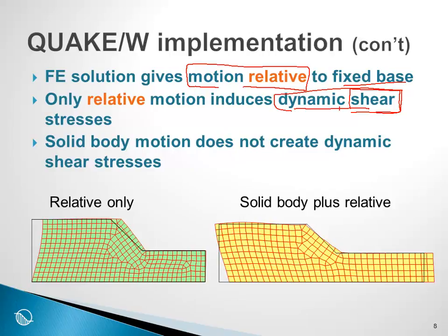To illustrate this further: on the left we have shown relative motion only, where the base is fixed and any movement in the structure is relative to the fixed base. This is in contrast to solid body motion. The solid body motion gives us the relative plus the solid body, which equals the relative plus whatever the earthquake itself produces in the motion.